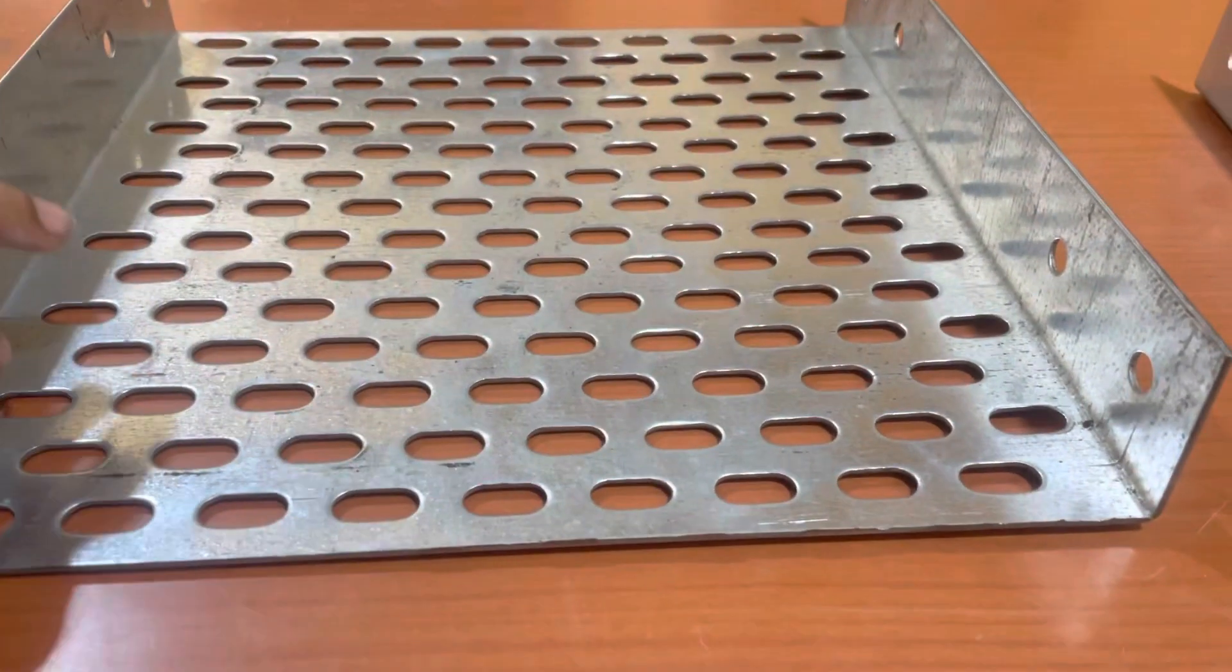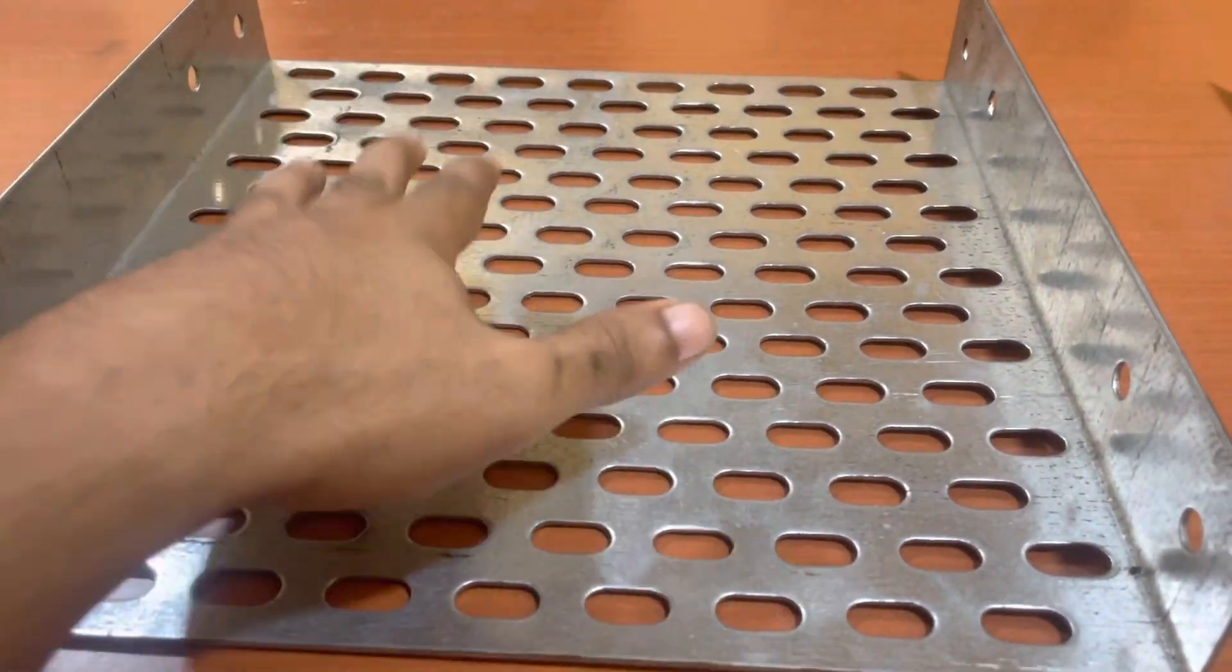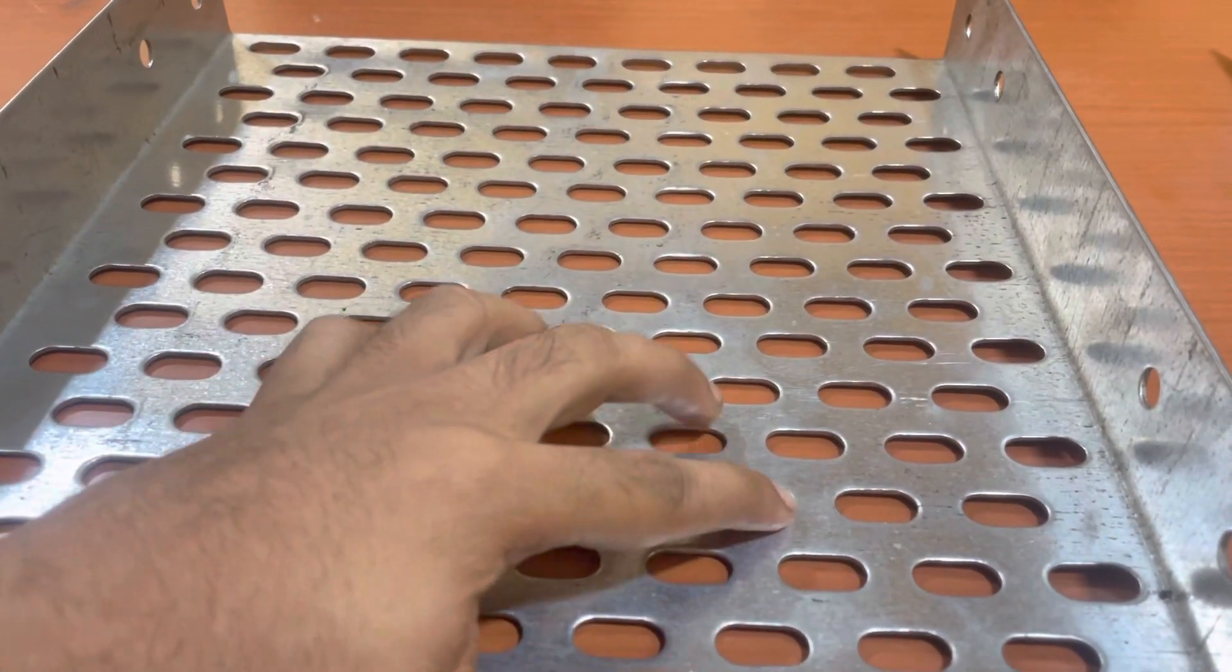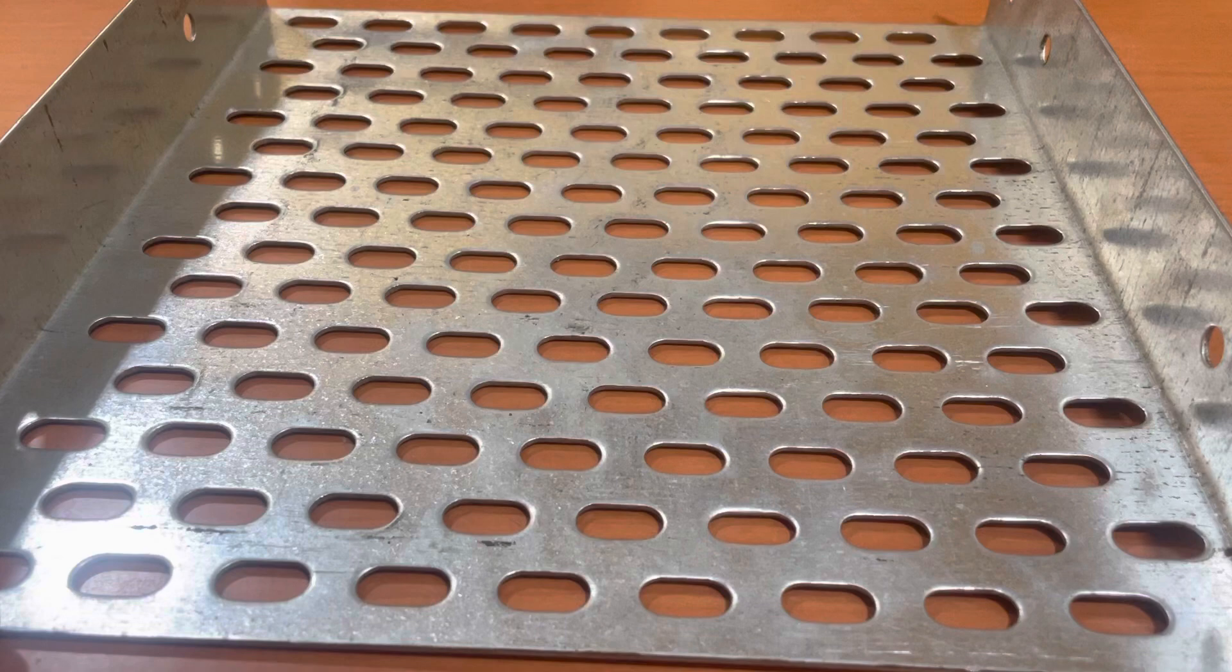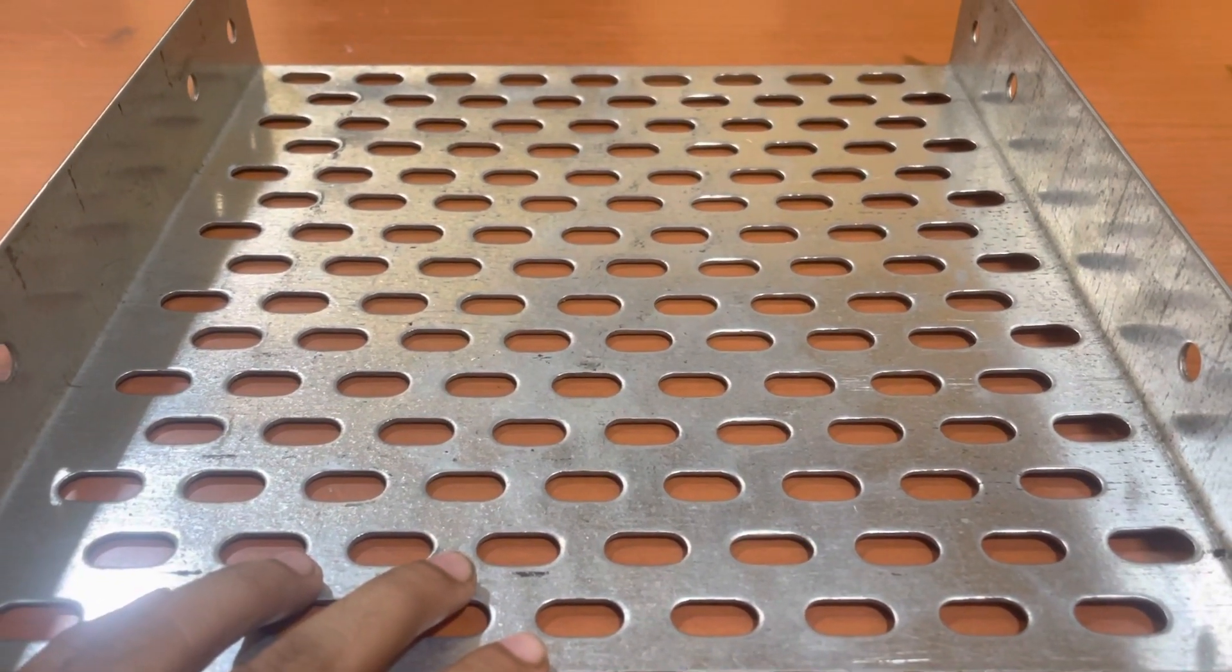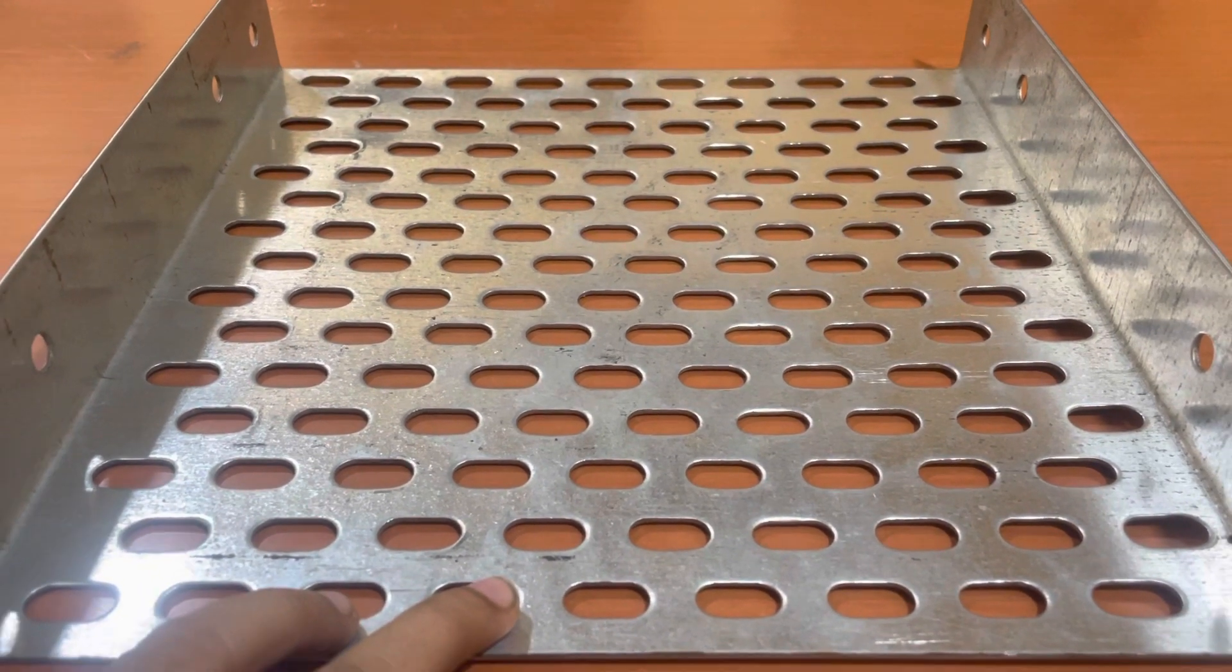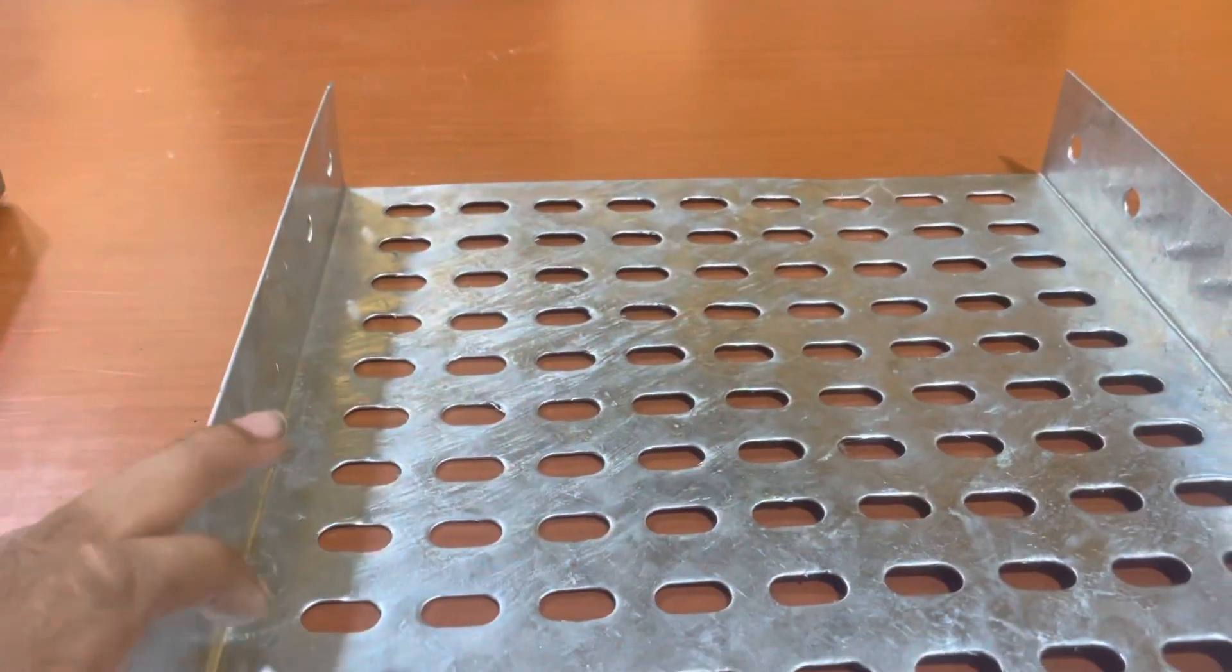This is perforated cable tray because it has perforations for fixing of cables. This is a basic low cost variant of cable trays, generally used for indoor applications. Second is hot dip galvanized cable tray.